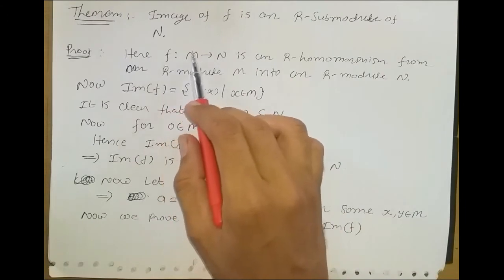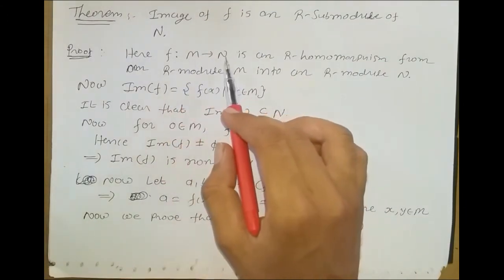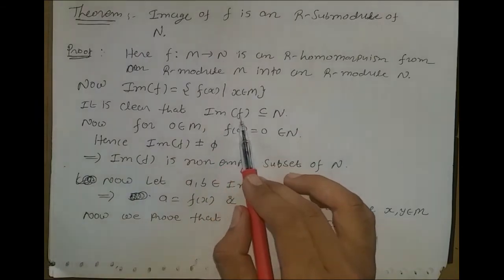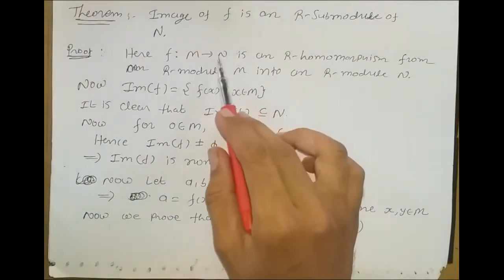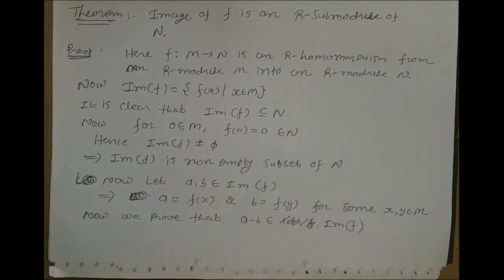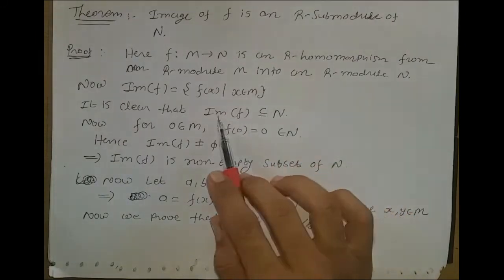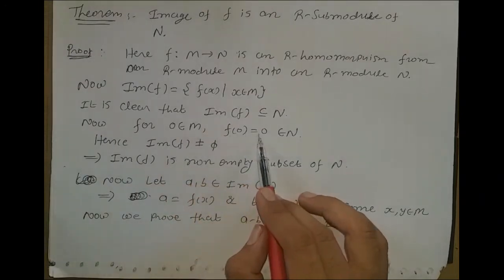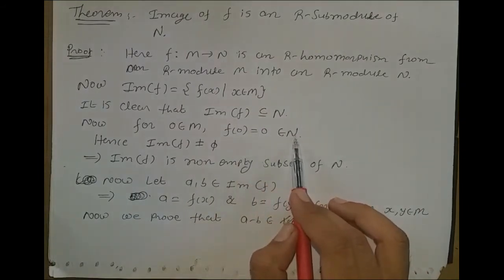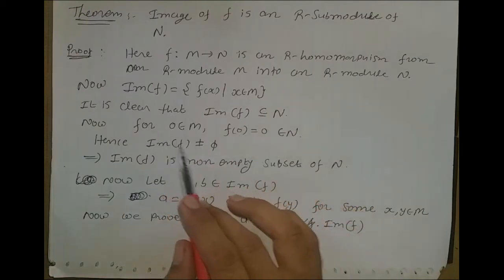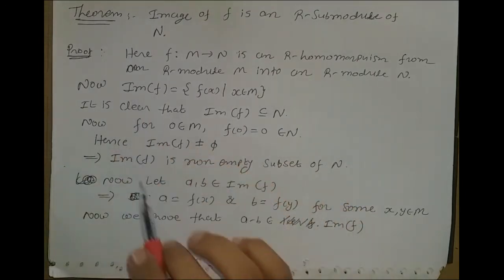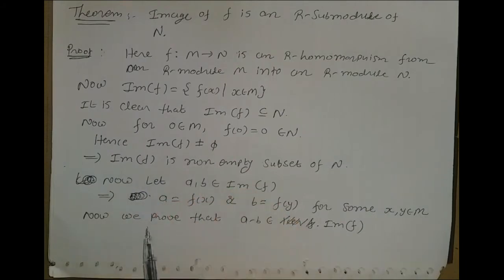When we apply the function on any element of M, the image goes into N. So by the definition of Im(F), it is clear that Im(F) is a subset of N, our codomain. Now we show that Im(F) is non-empty. Consider 0 belonging to M. Then F(0) equals 0, so we get 0 belonging to N. We get one element 0 in Im(F). Hence Im(F) is non-empty, so Im(F) is a non-empty subset of N.